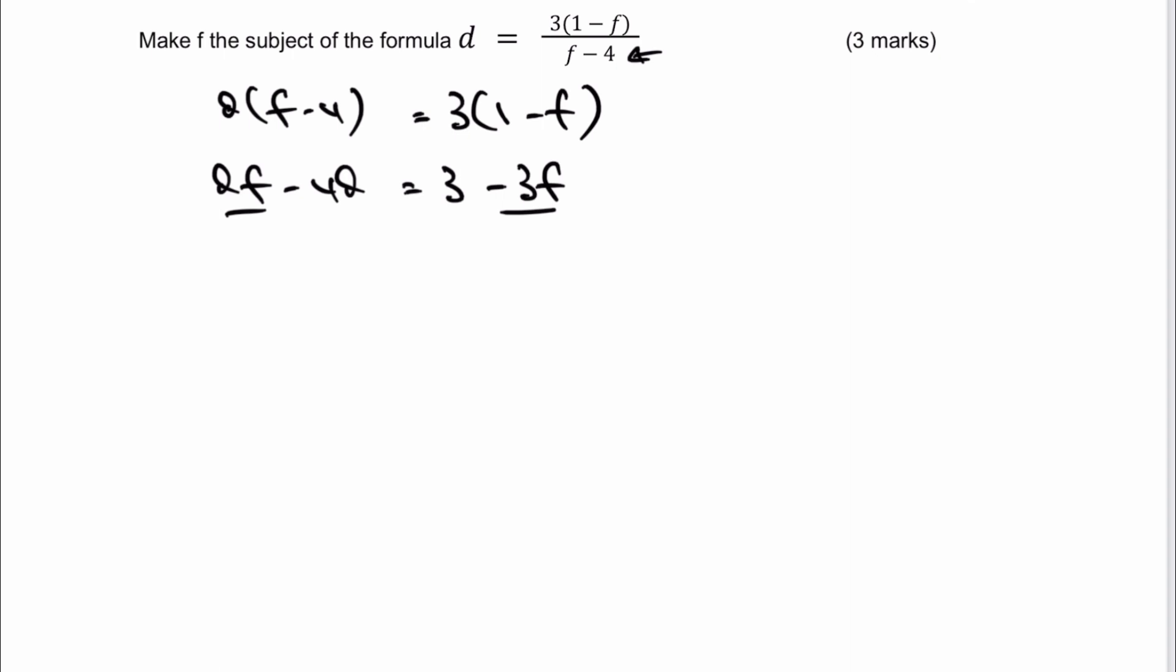So I'm going to have df plus 3f, and that's perfectly fine. The issue I've got now is I've got the minus 4d, which I need to get rid of. So I'm going to put that on the right-hand side. So that's going to give me 3 plus 4d.